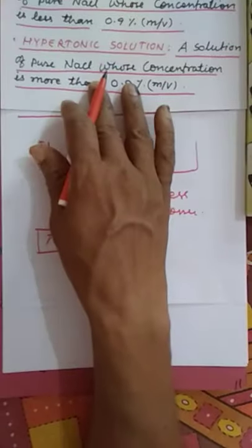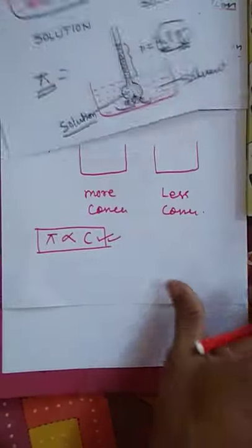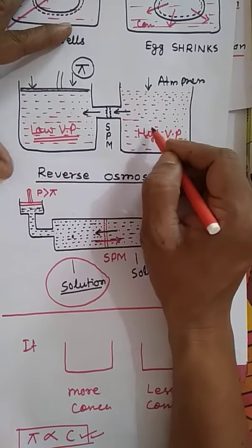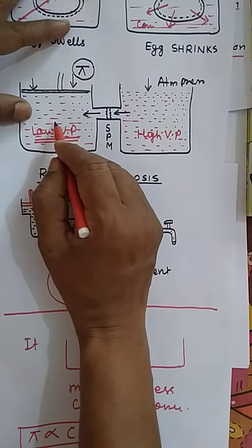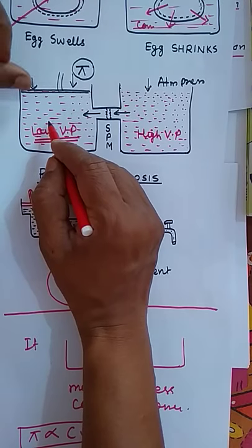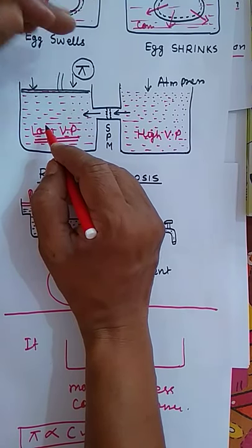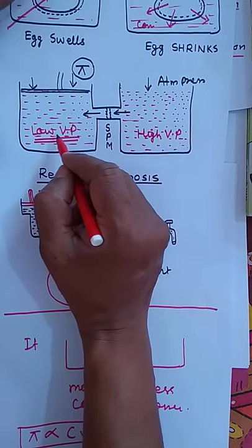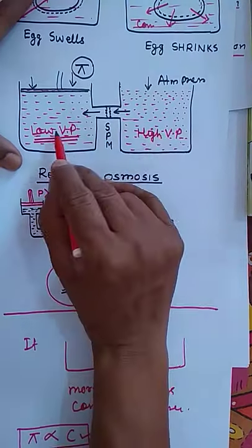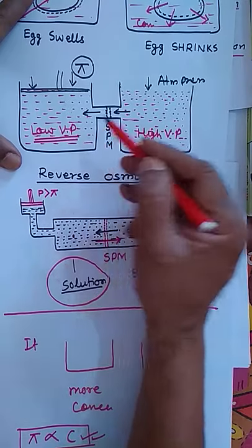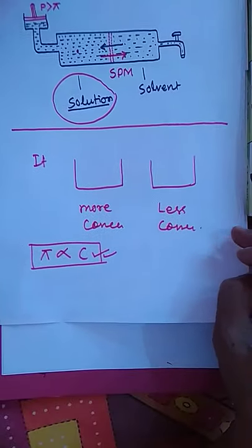You can verify this using the previous figure: if the solution is more concentrated, its vapor pressure is too low compared to the solvent, so you have to apply more pressure to stop osmosis — meaning higher osmotic pressure. If the solution is less concentrated, its vapor pressure is almost similar to the solvent, so very little pressure is required. Therefore, a concentrated solution always has more osmotic pressure.